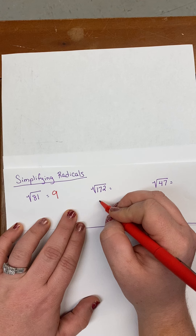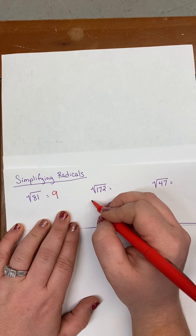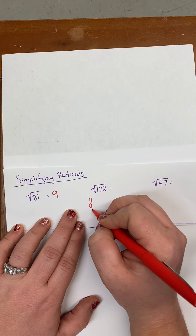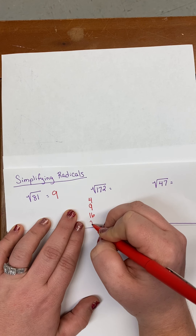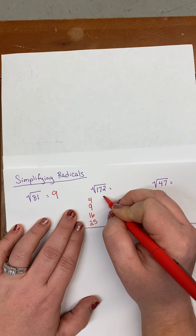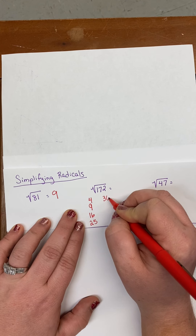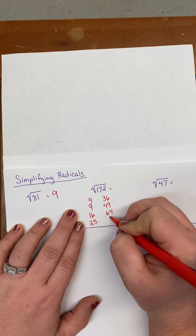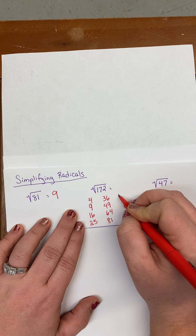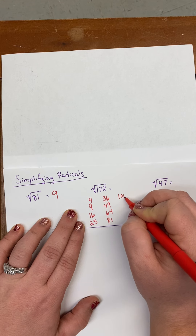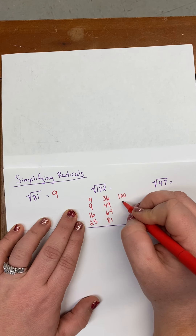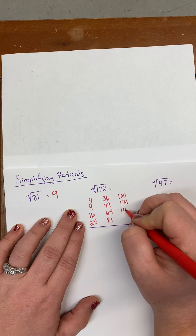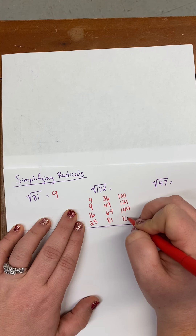The numbers that you need to look for are the perfect squares. They are: 4, 9, 16, 25, 36, 49, 64, 81, 100. We could keep going — 121, 144, 169.